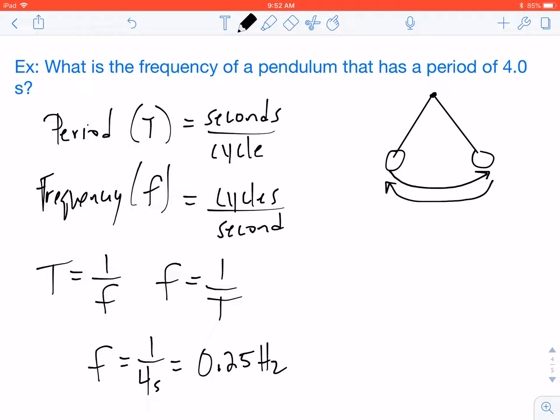Let's say we knew the frequency was 0.25 hertz. Let's kind of prove this. We can then find the period. So the period would equal one over 0.25 hertz, and we would end up with four seconds.